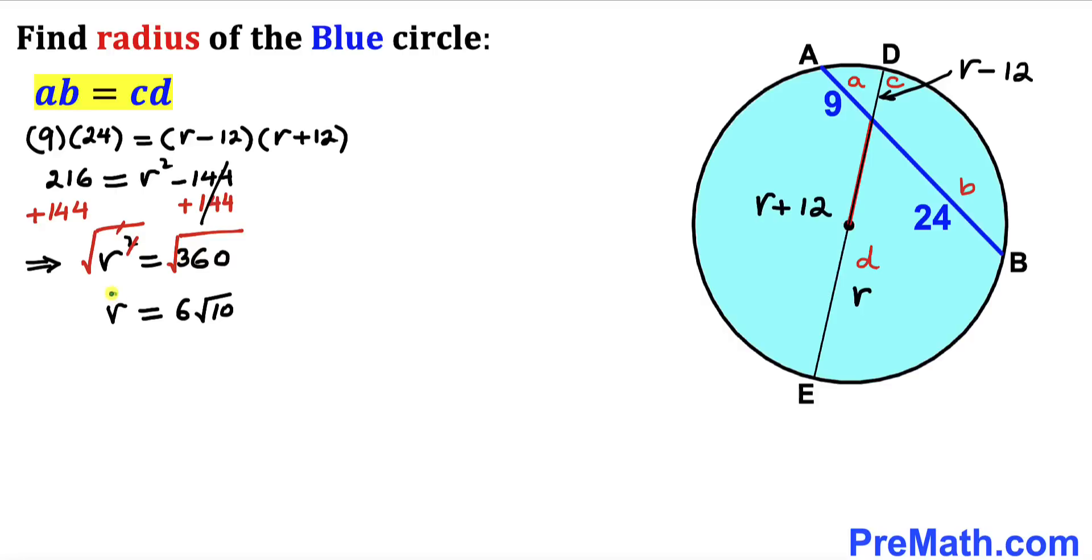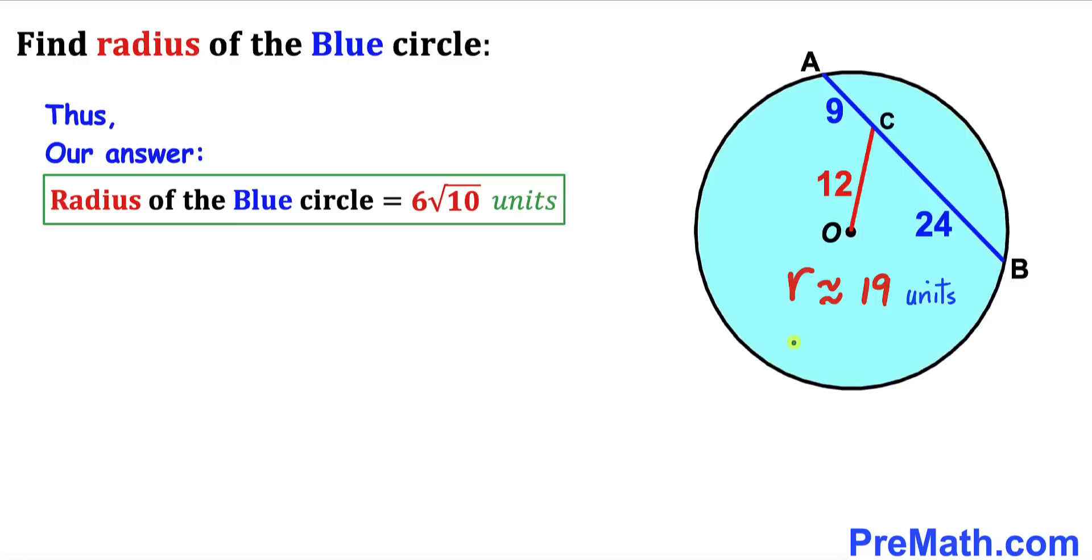Now we can see that this lowercase r represents the radius of this blue shaded circle. The radius of this blue shaded circle turns out to be 6 times square root of 10 units, which is approximately equal to 19 units. And that's our final answer.